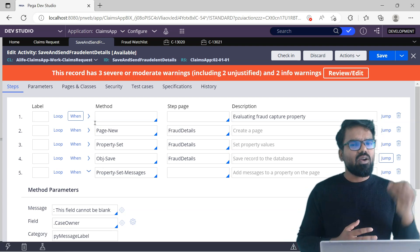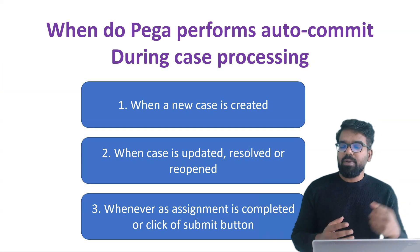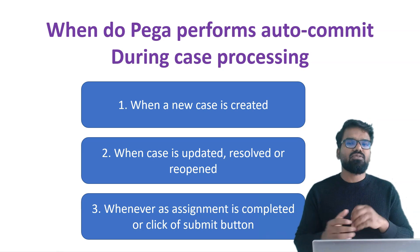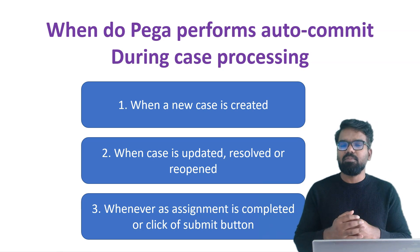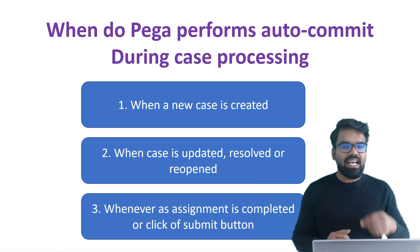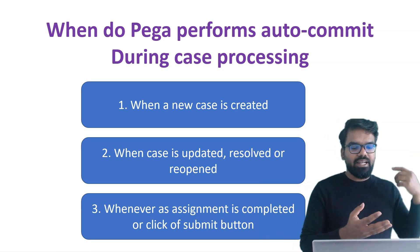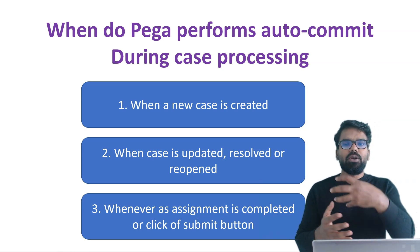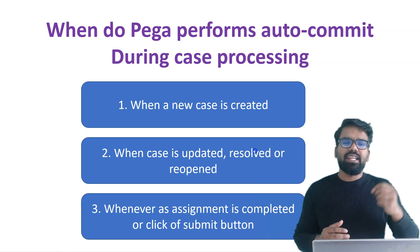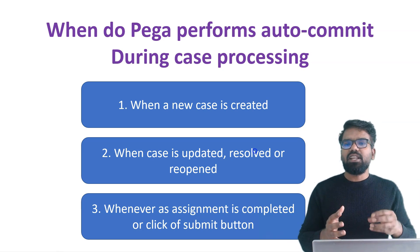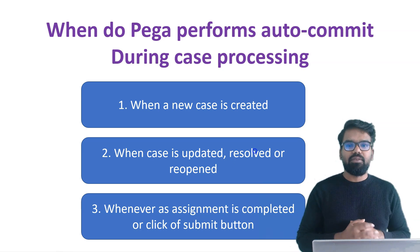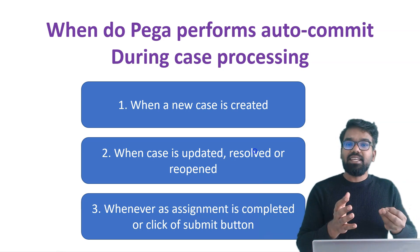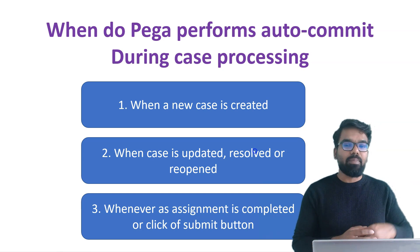Now an important question: what are the places where Pega automatically does a commit inside case processing? There are many places. The main ones are: whenever a case is created — you can do lots of updates like using py default data transform or out-of-the-box extension activity — never use commit or write now because Pega always does a commit as soon as a case is created. Next, as soon as the case is updated, resolved, or reopened — different actions call the 'commit with error handling' activity, which also handles rollback. And third, we already saw that whenever an assignment is completed and you press the submit button, Pega uses the finish assignment activity which contains the commit actions.